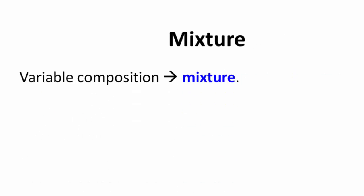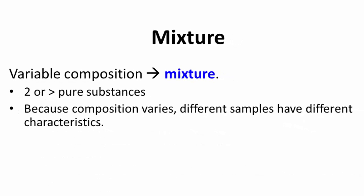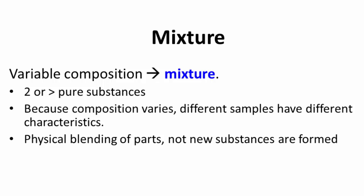Mixtures have a variable composition — they have two or more pure substances mixed together. Because the composition varies, different samples have different characteristics. For example, adding salt to water changes the boiling point, and adding more salt changes it even more. Mixtures involve physical blending of parts, and a new substance is not formed — the components are never chemically combined. An example of a mixture is air, composed mostly of nitrogen along with carbon dioxide, oxygen, argon, and dust. Another example is Coke: water is the biggest component, plus carbonation, flavorings, and sugar — all blended together in a mixture.